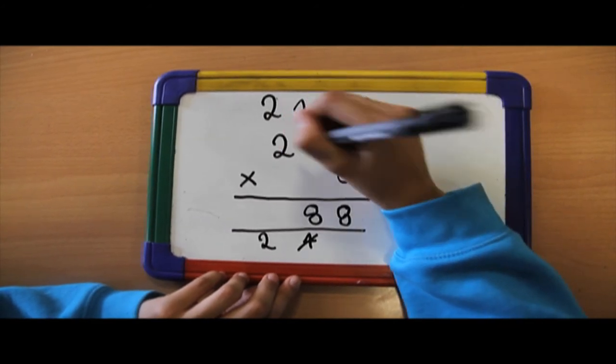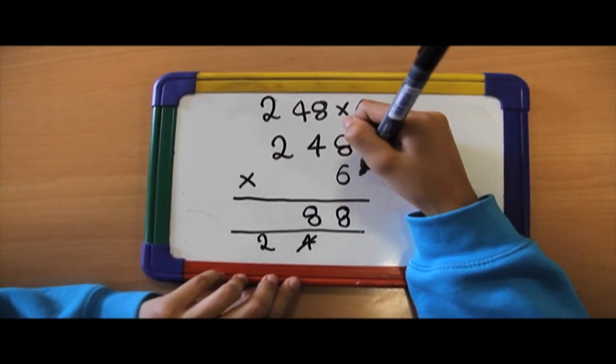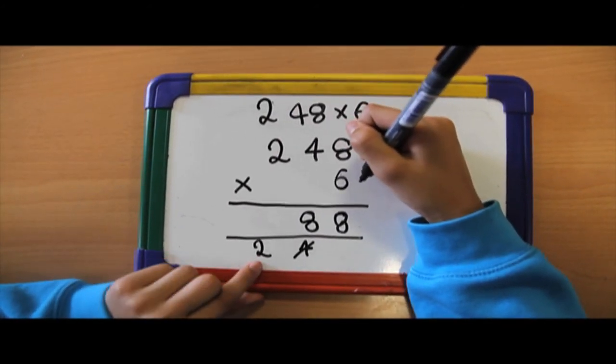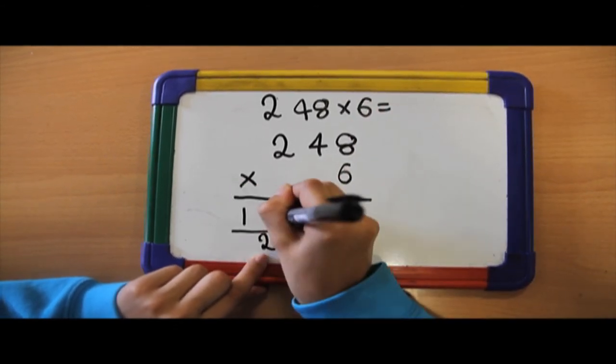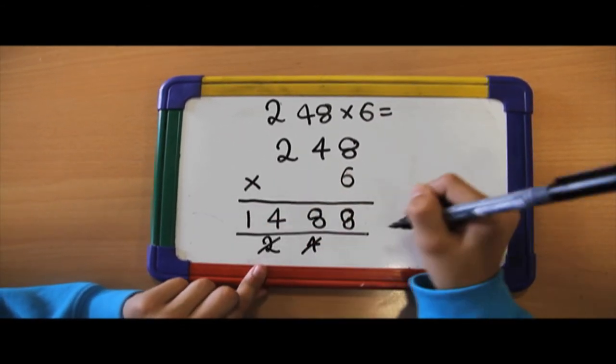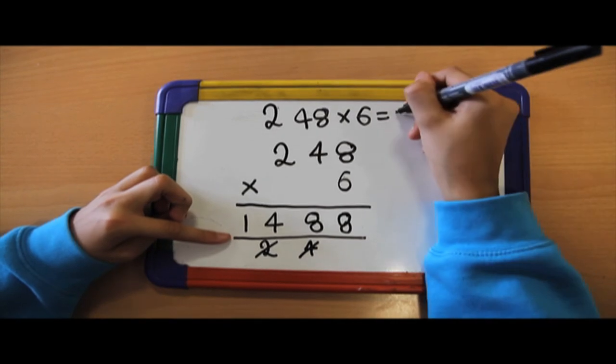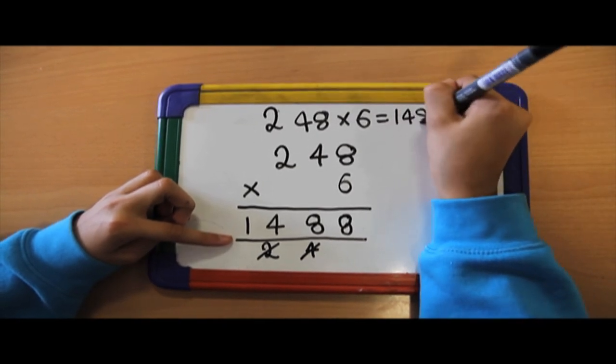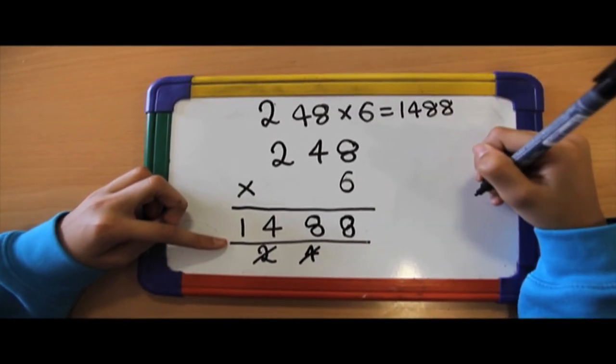Now, do 6 times 200 which is 1200, and then add the other 200 which is 1400 and cross out the 200. Your answer is 1488.